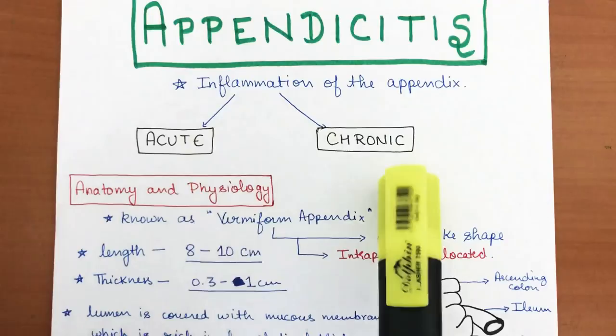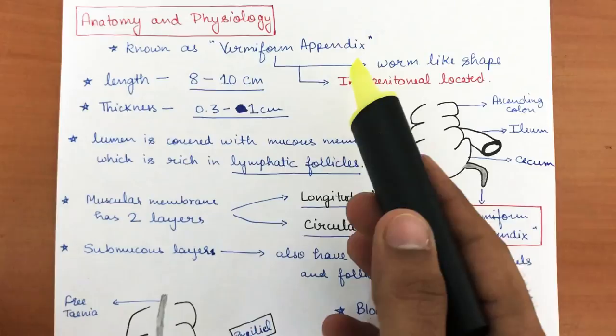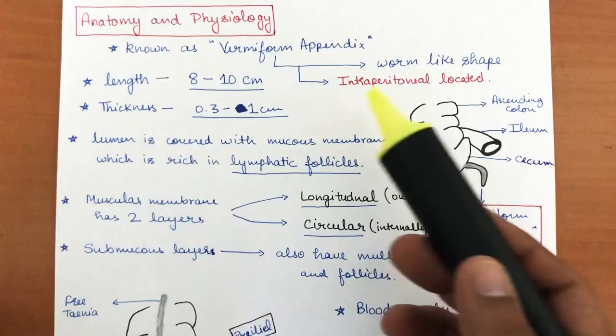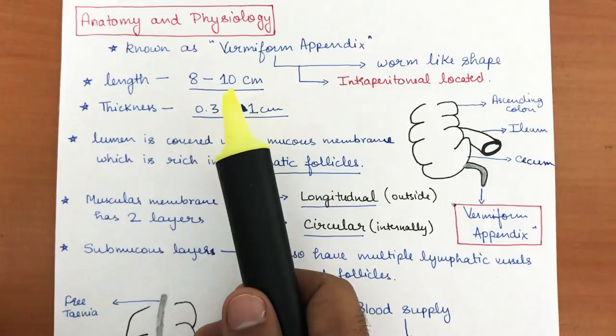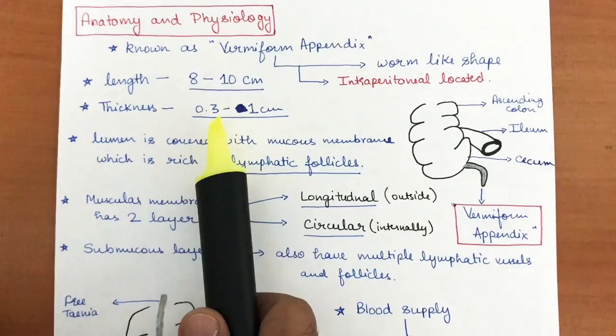The appendix is also known as the vermiform appendix. The name 'vermiform' is given because of its shape — it is worm-like in shape. It is intraperitoneally located, meaning it is located within the peritoneal cavity. The length of the vermiform appendix is 8 to 10 centimeters — that is the normal size, though it can vary from person to person — and the thickness is from 0.3 to 1 centimeter.